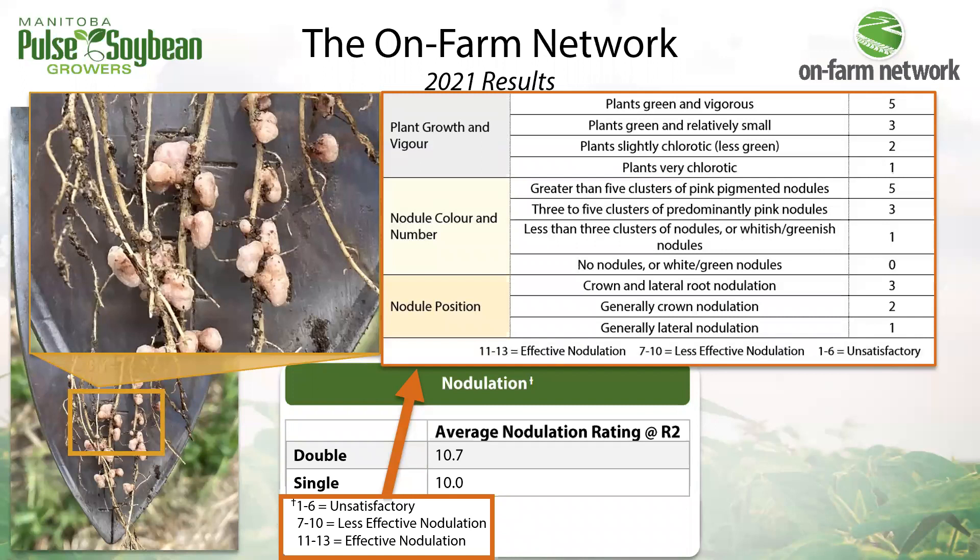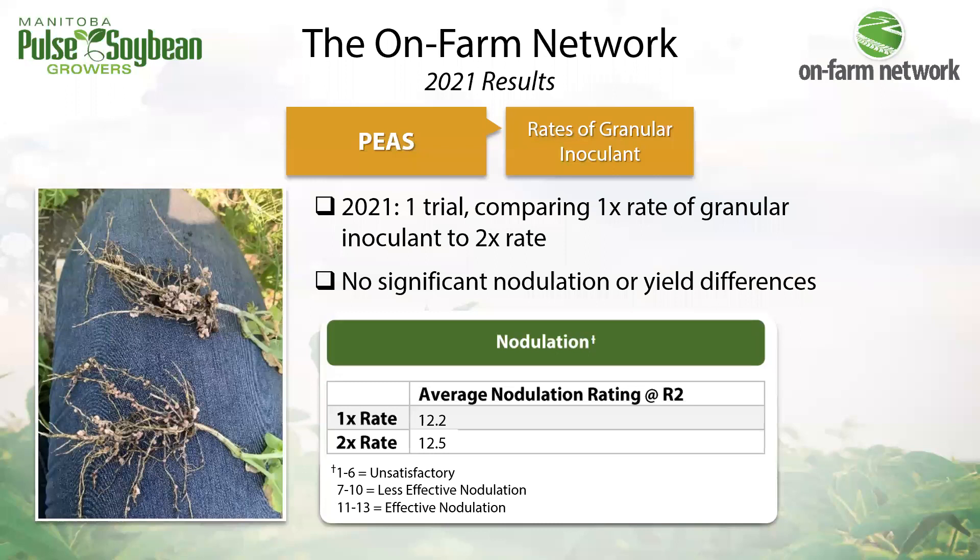This trial just barely fell into the less effective nodulation category — no difference between treatments — and that reduction in nodulation is expected due to the dry conditions, which were especially apparent in this field. A second inoculant trial investigated rates of granular inoculant, comparing a normal rate to a double rate. There were no significant nodulation or yield differences here either.